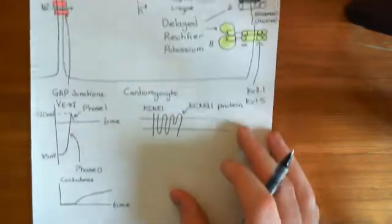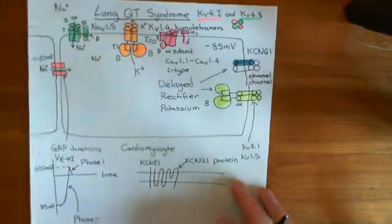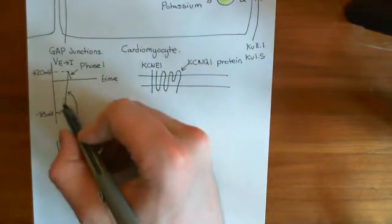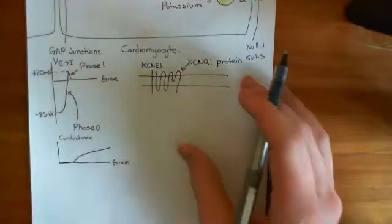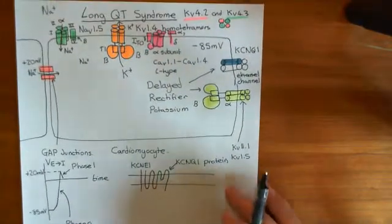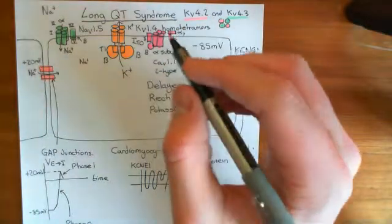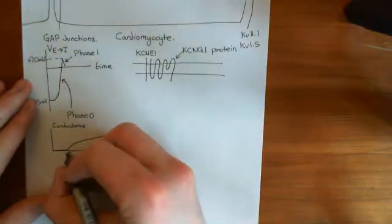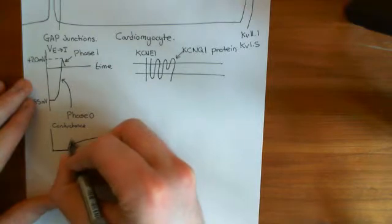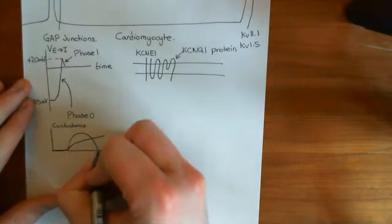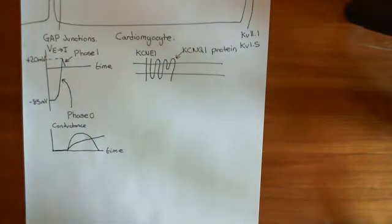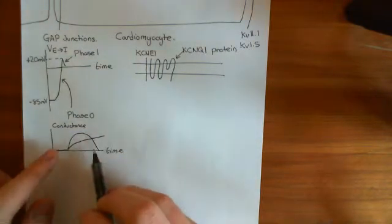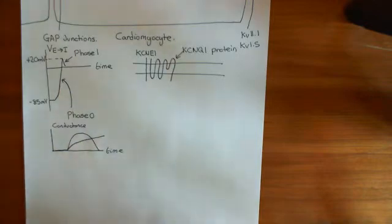We also need to discuss the L-type calcium channels. They too will have been activated to open in phase zero — past their threshold potential, they will open and conduct calcium. Their conductance goes up as well, but they don't activate as quickly as you might expect, taking a little time to open. Importantly, they inactivate before the potassium channels inactivate.